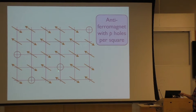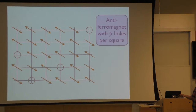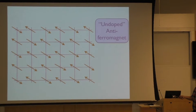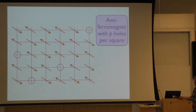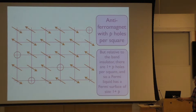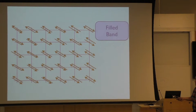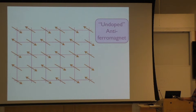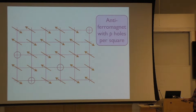So this density of holes relative to the antiferromagnet is P. But relative to this state, which is the fill band, if I take this state, the density of holes is 1 plus P.